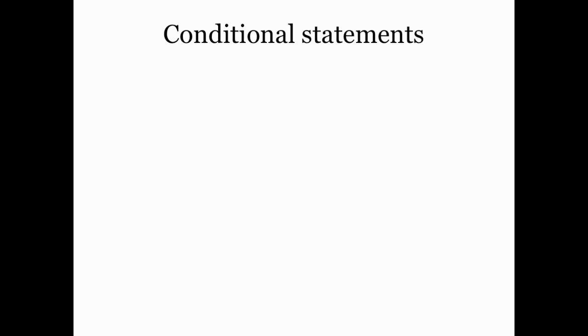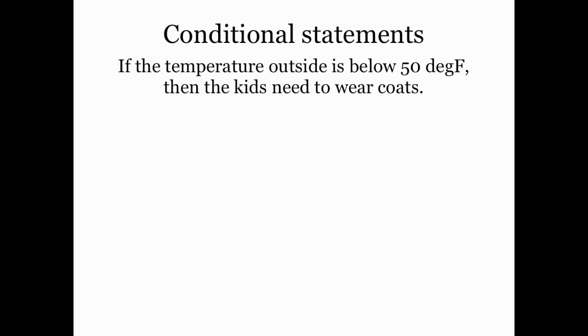Many times in life we're given information and we have to make a decision based on that information. For example, when I get my kids ready for school in the morning, I need to know how to dress them. Inside my brain there's a little algorithm that might say: if the temperature outside is less than 50 degrees Fahrenheit, then the kids need to wear coats. This is a conditional statement — an if-then statement — where we input some information, namely the temperature outside, and produce output based on a condition. If it's below 50, they need to wear a coat.